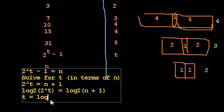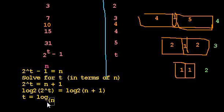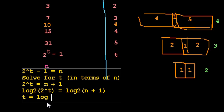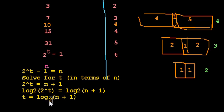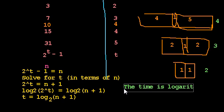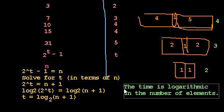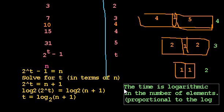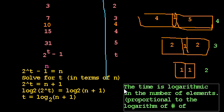I'm making a mess. Don't worry, it's going to be okay. There we go. t is the log base 2 of n plus 1. And if you know enough about, actually, I think we'll just summarize that like this. We'll say, the time is logarithmic in the number of elements. Or we could say, the time is proportional to the logarithm of number of elements.